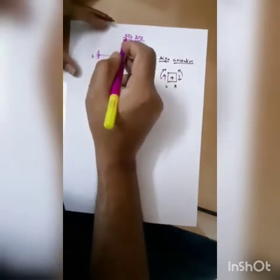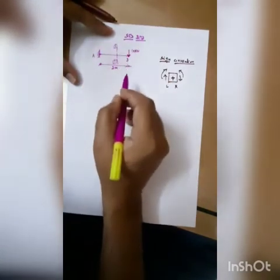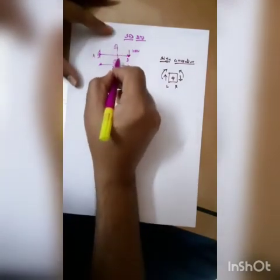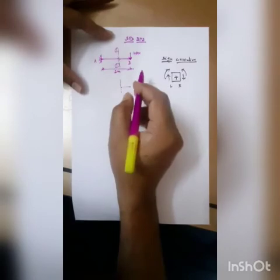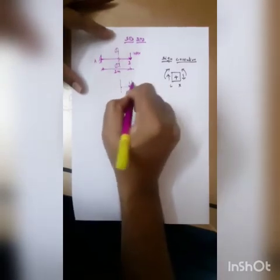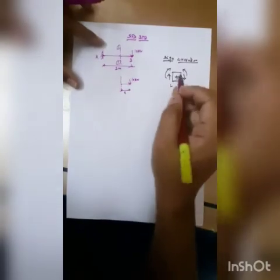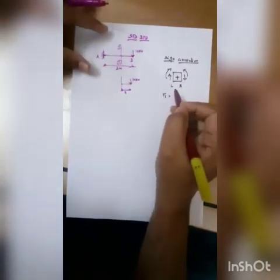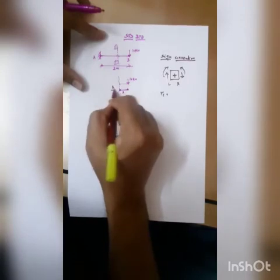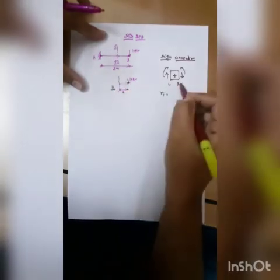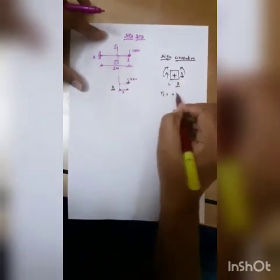Now let us take a small section 1-1 for writing down the shear force and bending moment equations. This is the left of 1-1 and this is the right of 1-1. I will take the right-hand side portion. So this is 10 kilonewtons. Let us take this distance as x. The shear force is the algebraic sum of vertical forces. The right-hand side portion has a downward force, and right side downward means positive. So the shear force is plus 10 kilonewtons.